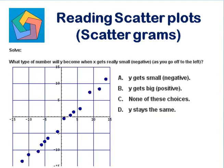Next problem. Solve: what type of number will y become when x gets really small negative as you go off to the left? Let's see the best fit line here. This is my best fit line.